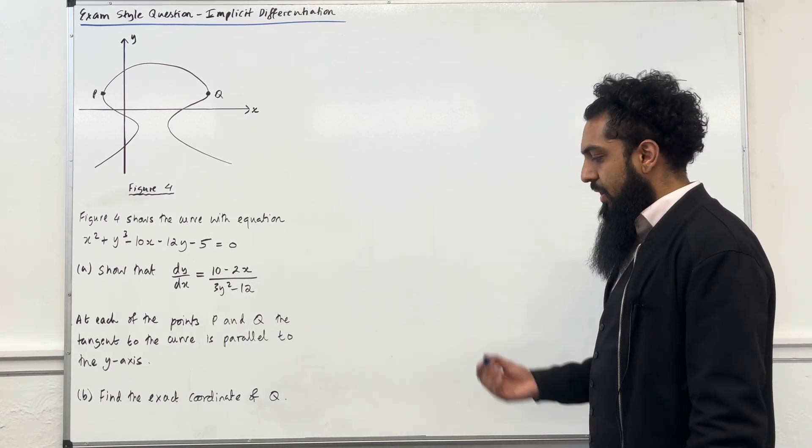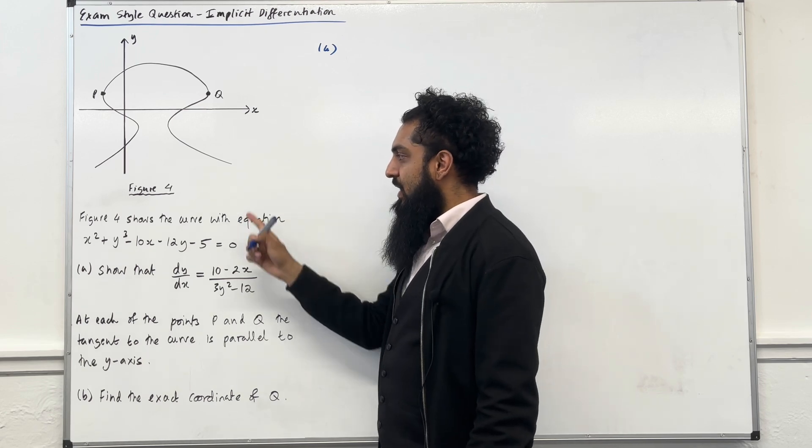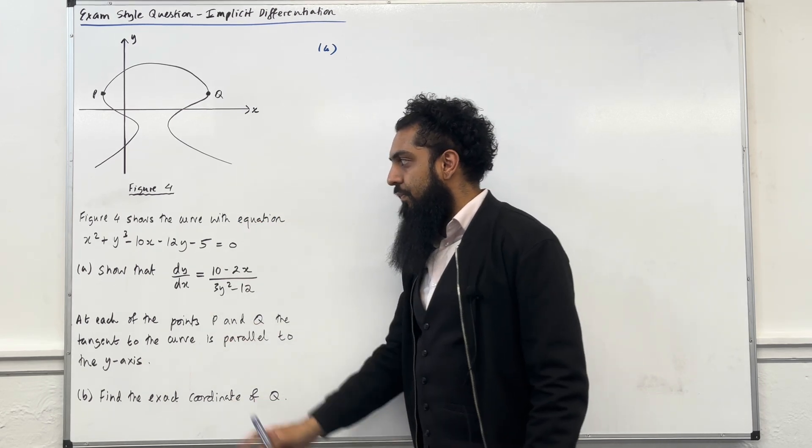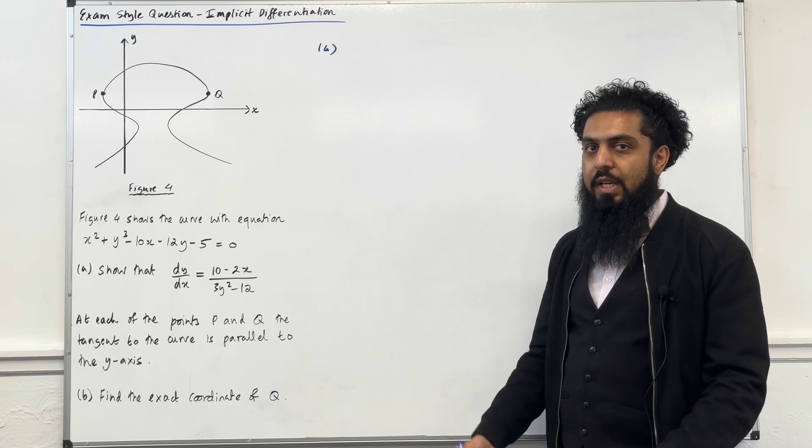Let's have a look at the solution to part A. So this curve over here is defined as an implicit equation. x is not the subject, y is not the subject, so we call it an implicit equation.